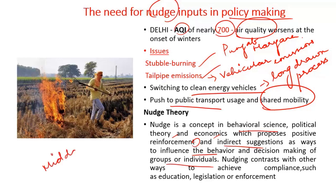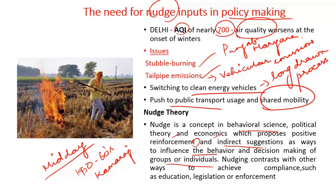The midday meal scheme was introduced in Tamil Nadu during the 1950s and 60s. The literacy rate in Tamil Nadu was very low, but with the introduction of the midday meal scheme, more children got enrolled in schools and Tamil Nadu's literacy rate increased. This creates an indirect influence — it changes the behavior and decision-making of a group or individuals, making nudge theory more important in public policy making.